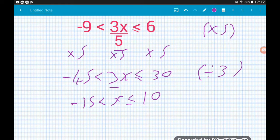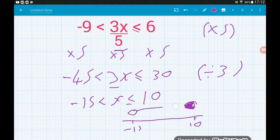And then 30 divided by 3 is 10. So for this one, x is greater than minus 15 but is less than or equal to 10. So on a number line, find minus 15, find positive 10. The 10 is going to have a filled in circle above it. And then minus 15 is going to have a hollow circle. And then we join them with a line. On to the next.